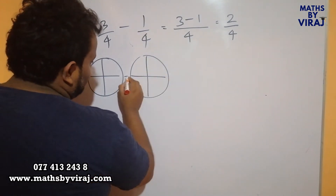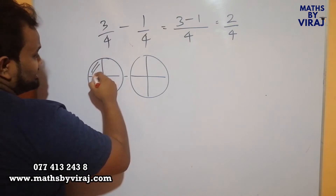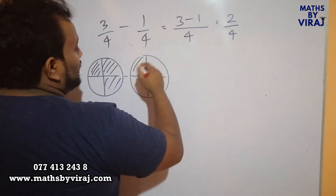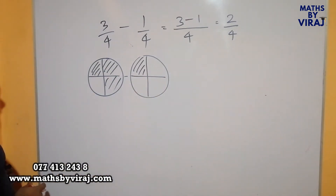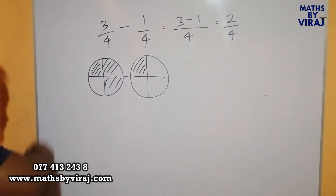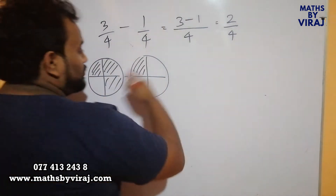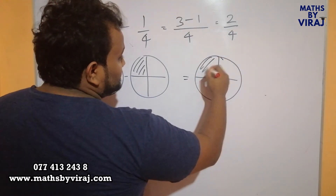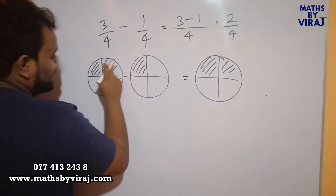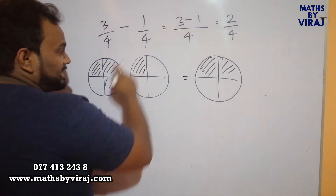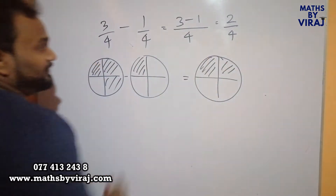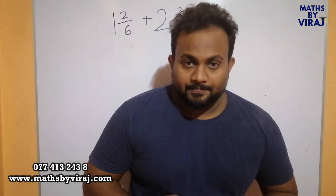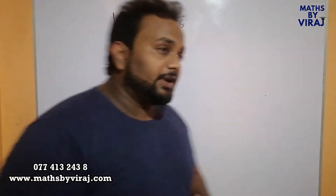If I draw two diagrams and subtract these two: in this one I have 3 parts and from that I have to remove one part. So from these 3 parts, if I remove that particular part, what am I getting? I am left with 2 parts.